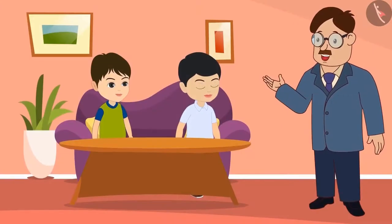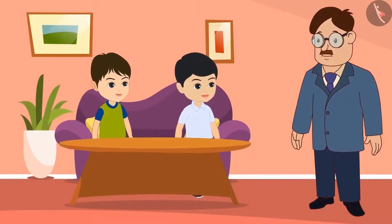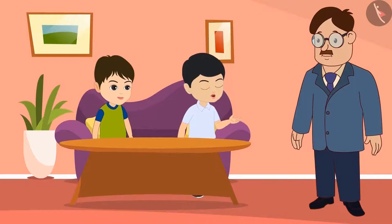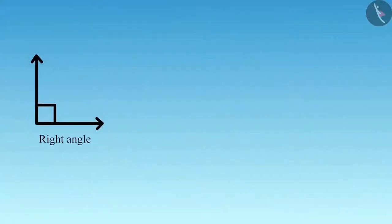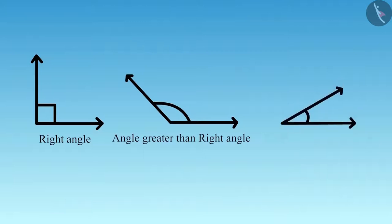Okay. Tell me about the angles you know. Uncle, we know about three types of angles. Right angle, angles greater than right angle and angles less than right angle.